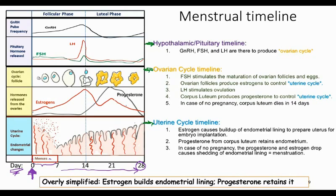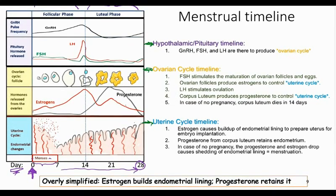With that timeline, we can break the cycle up into two phases: the follicular phase and the luteal phase. The follicular phase is the period of time where follicles are maturing. The luteal phase is after ovulation, and it's named luteal because that's when you have the corpus luteum.